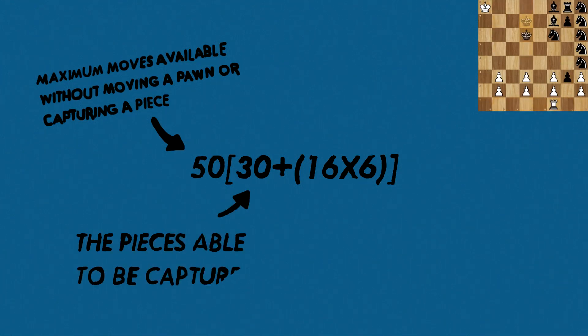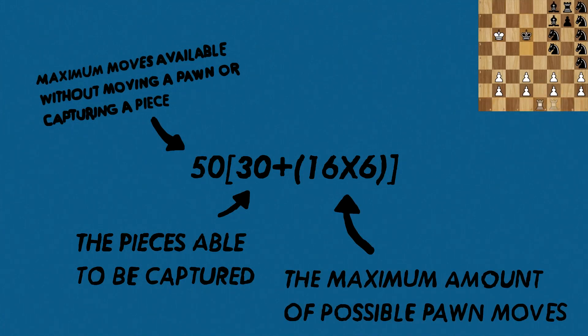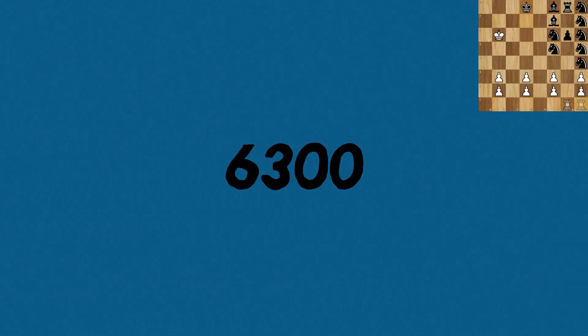50 is for the amount of moves you can have before you have to refresh, otherwise you get a forced draw. The 30 is the amount of pieces that can be captured, which as mentioned before is every single piece except for the kings. 16 times 6: 16 being the amount of pawns on the board, and 6 being the refreshes they offer when moving forward, we get the number 6300 when we add this calculation together.